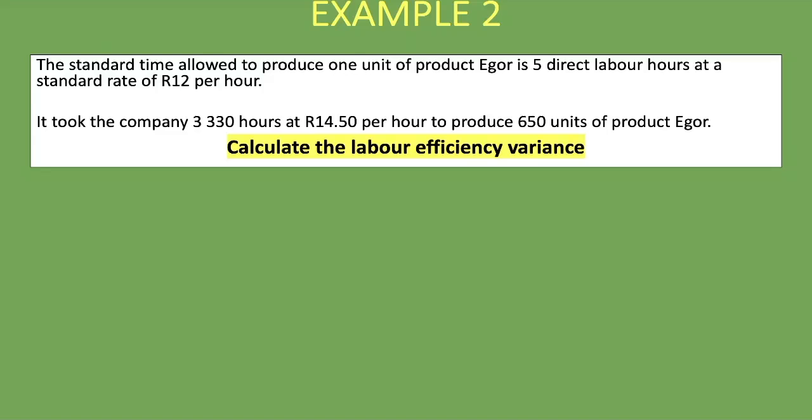Here is Example 2. Pause the video and attempt the question on your own to gauge your understanding. The question: the standard time allowed to produce one unit of product Ego is 5 direct labor hours at a standard rate of 12 rand per hour. It took the company 3,330 hours at 14 rand 50 per hour to produce 650 units of product Ego. Calculate the labor efficiency variance.